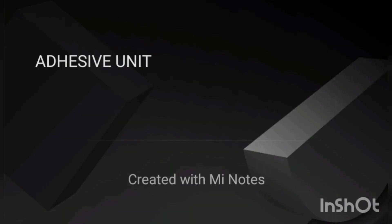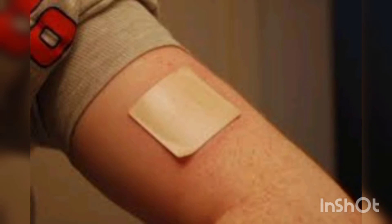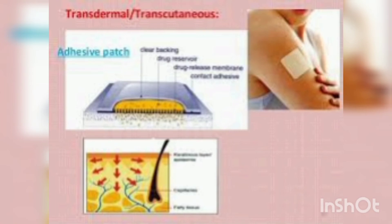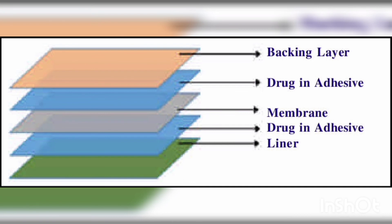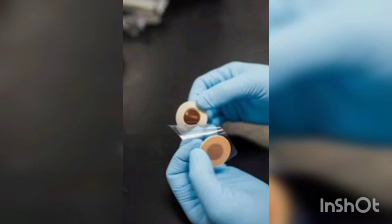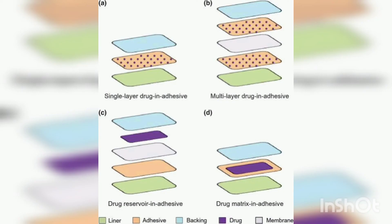Lastly, adhesive units — it is a transdermal drug delivery system available in the form of an adhesive unit, delivering the drug slowly by producing a prolonged systemic effect. Example: scopolamine for motion sickness. The transdermal drug delivery system consists of four layers: the backing film, the reservoir layer, the rate-controlling micropore membrane, and the lowermost adhesive layer.